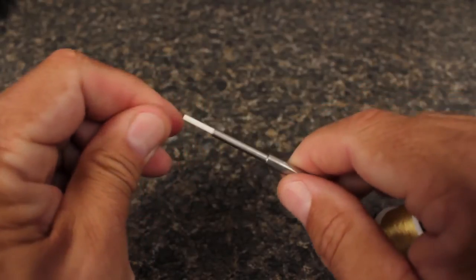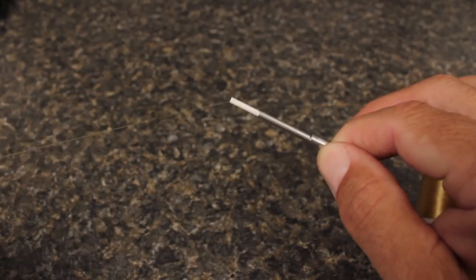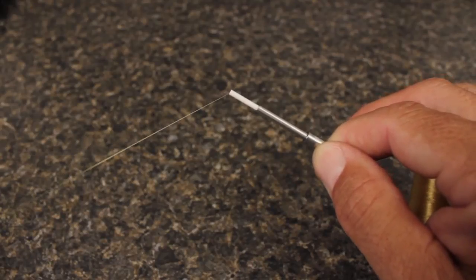The heavy-duty drag adjustment system on the Wright Cermag bobbin can be set anywhere from 2 to 16 ounces of thread tension.